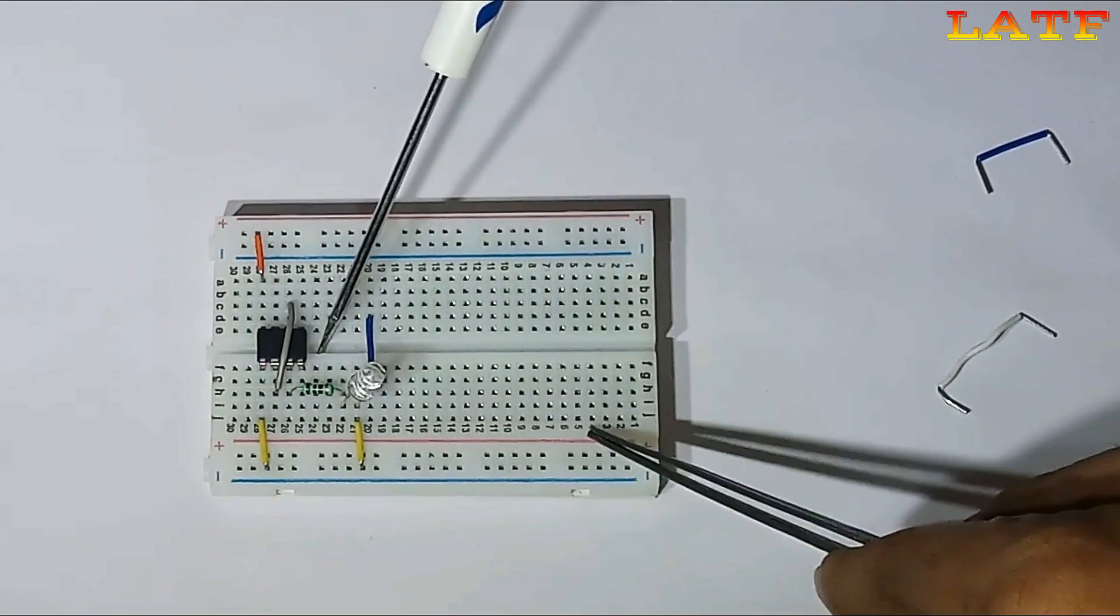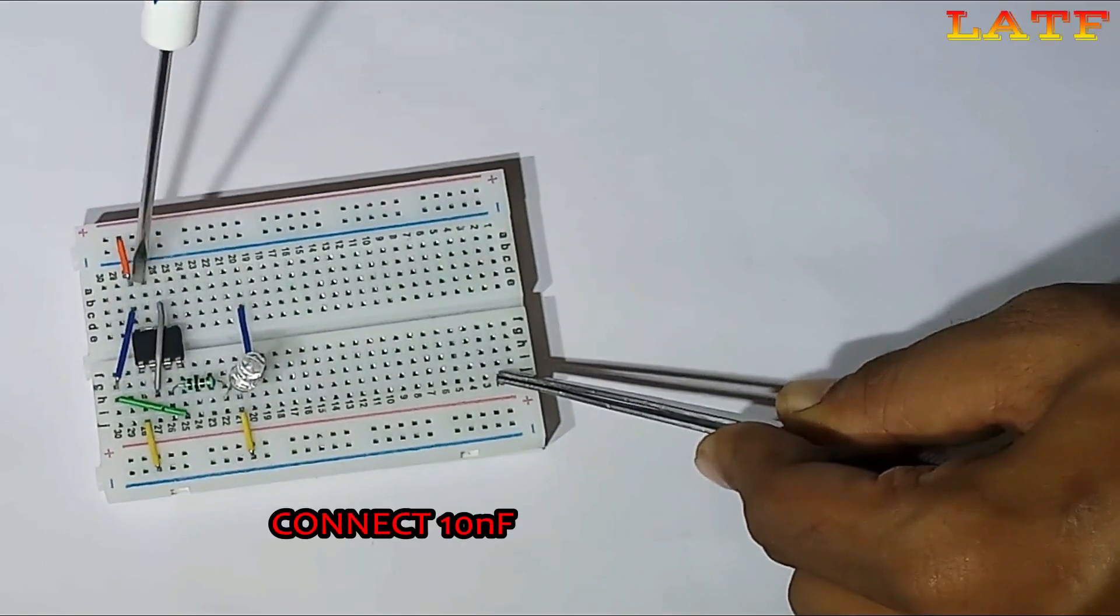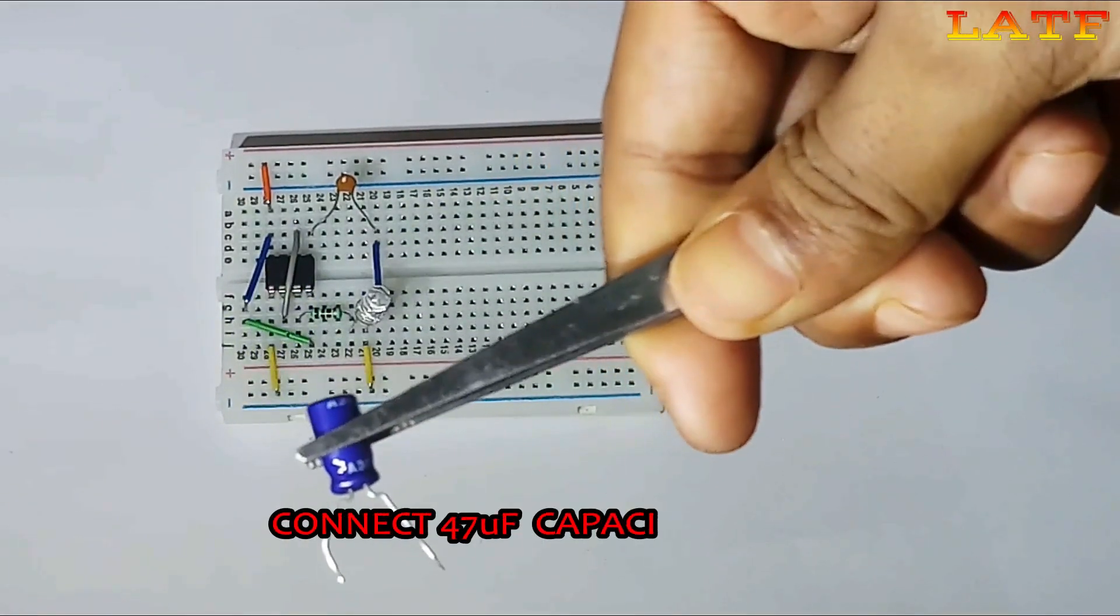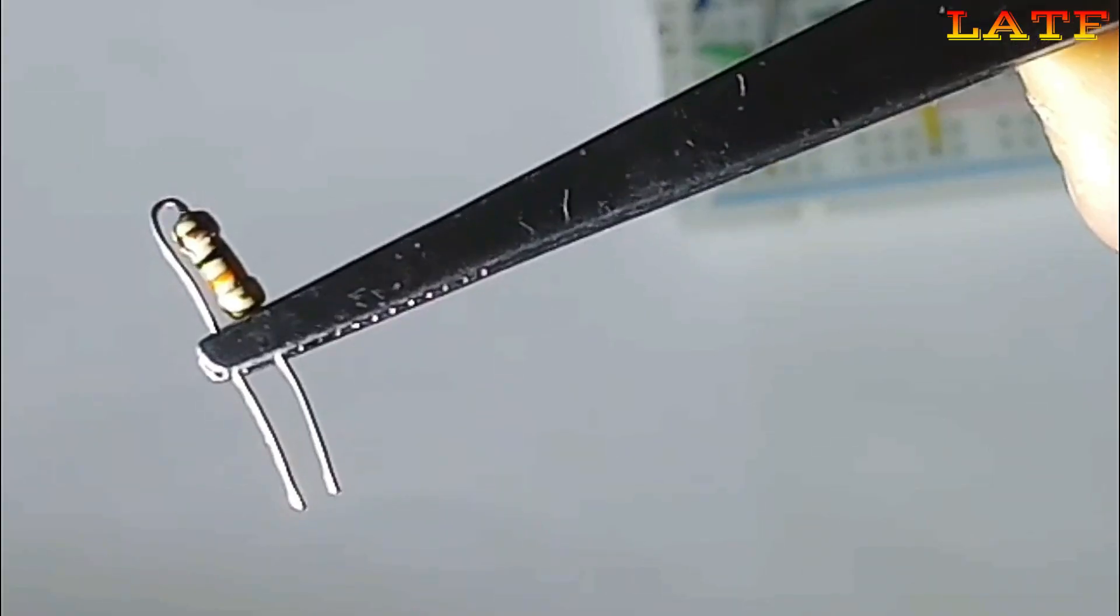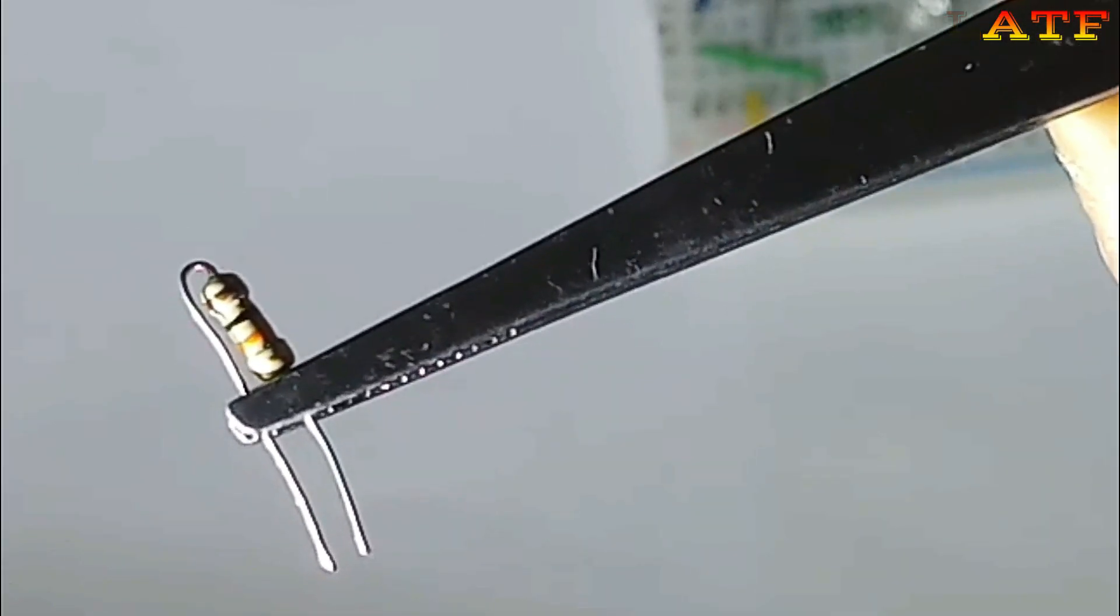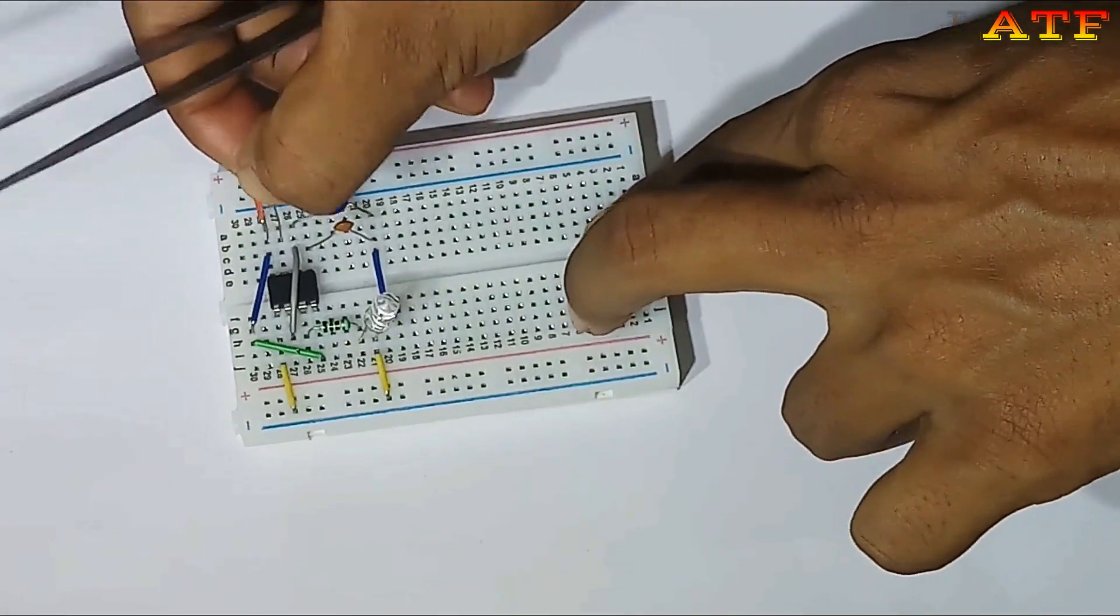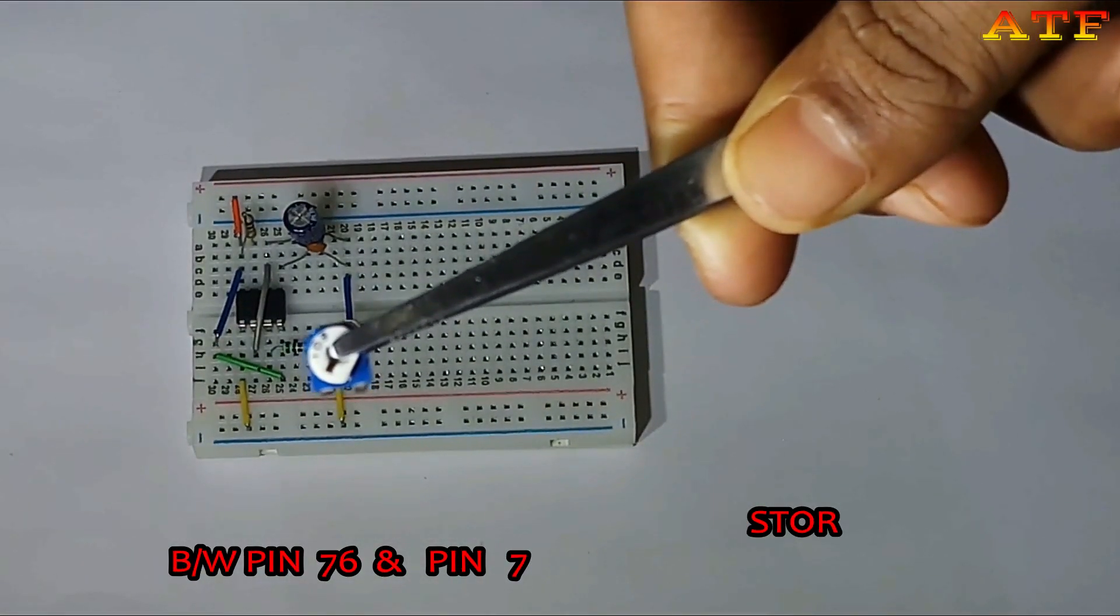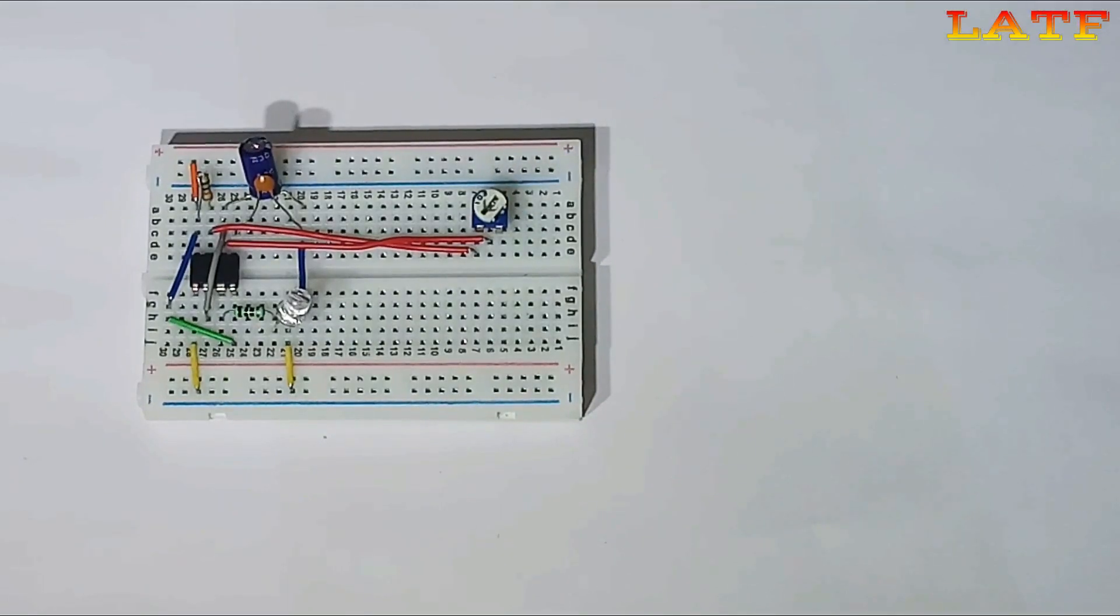Now, connect the LED to pin number 3 and ground in series of 100 Ohm resistance. Now, connect the fourth pin of 555 to VCC. Connect the capacitor of 10 nF between pin number 5 and ground. Now, connect the capacitor of 47 microfarad 63 volt between pin number 6 and ground. Connect the resistance between pin number 7 and 8 of 10 kOhm. Now, connect the variable resistance between pin number 6 and 7 of 10 kOhm. This 10 kOhm variable resistor is connected between pin number 6 and 7.